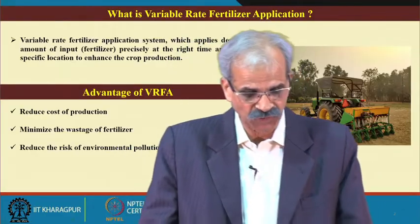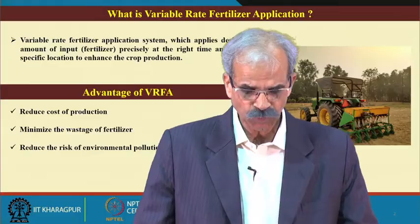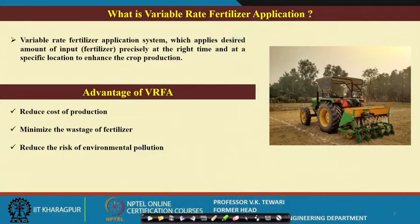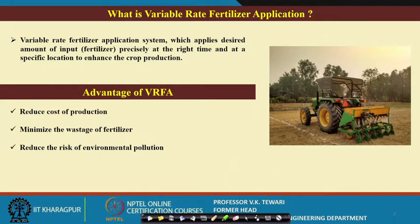What is the variable rate fertilizer application system? We would like to know, at a particular location in the field, what is the amount of nitrogen there and how much should be applied for the crop. If a large amount is already available and you add more, excess of anything is bad. The advantages are: it reduces the cost of production, minimizes wastage of fertilizer, and reduces the risk of environmental pollution.